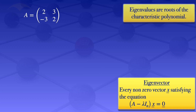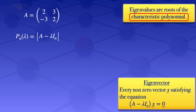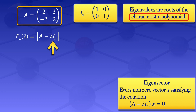By definition, eigenvalues are roots of the characteristic polynomial, so to get those eigenvalues we have to find the characteristic polynomial first. The characteristic polynomial, which we denote by P_n of lambda, is the determinant of (A minus lambda I_n). The I_n there is an identity matrix which has the same size as the given matrix — in this case a 2×2 matrix, so I_n is the 2×2 identity matrix with 1s on the diagonal.